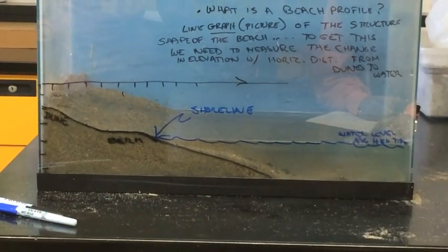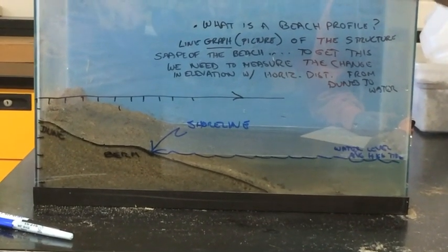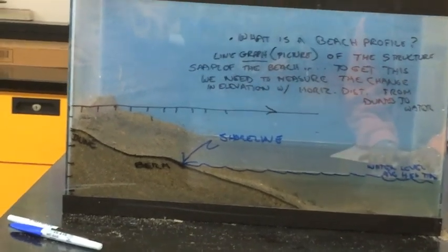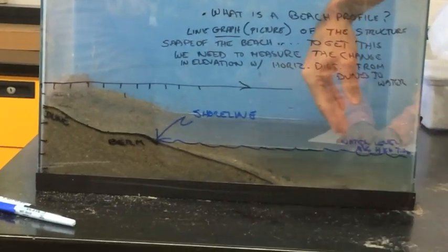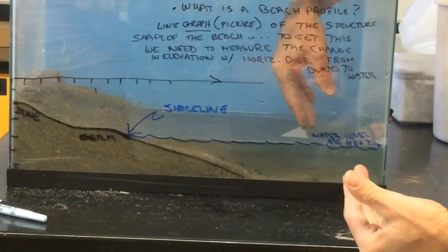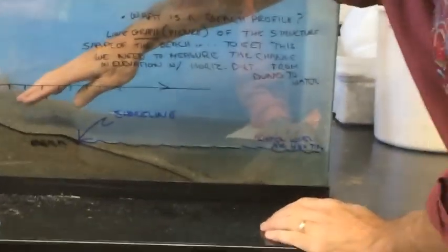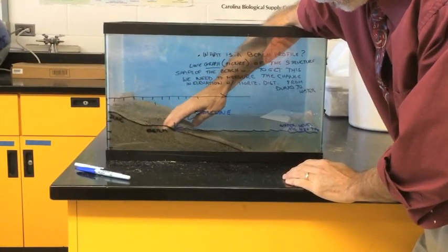There would be sand bars, more erosion. What's going to happen? The waves are going to get bigger and erode away the berms. Typically in the winter, we get stronger storms with more intense wave activity, which erodes the berm away.